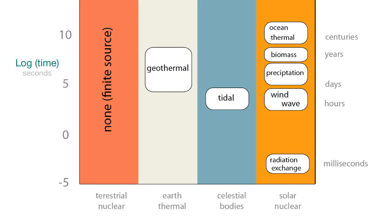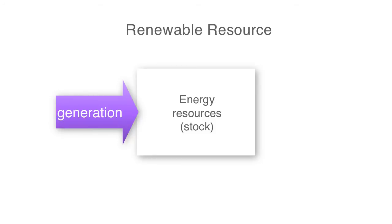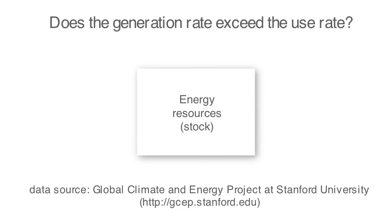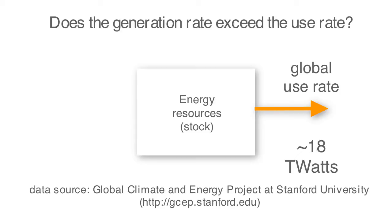In order to assess renewability, we have to look more closely at the flows. A renewable resource is one where the flow rate into the stock is greater than the depletion rate out of the stock. Based on data from the Global Climate and Energy Project at Stanford University from 2005 and 2007, the global use rate is about 18 × 10¹² joules per second, or 18 terawatts.